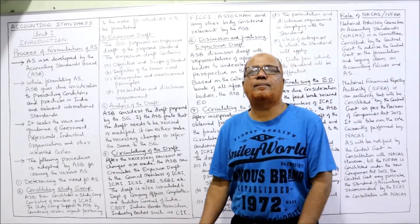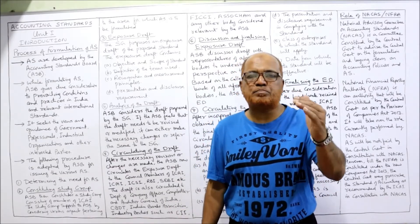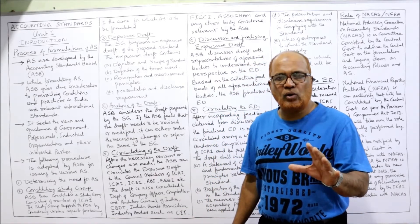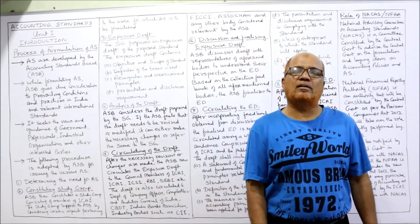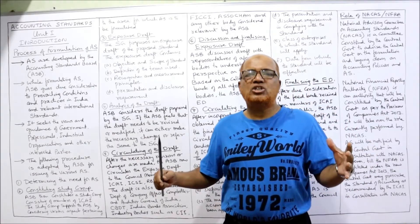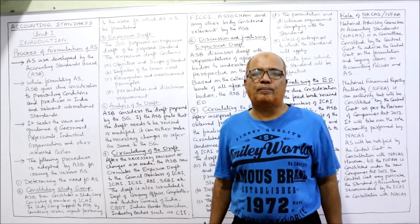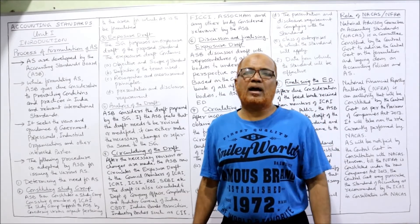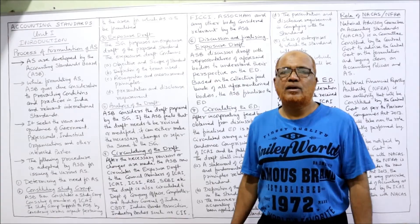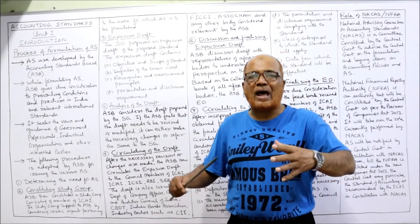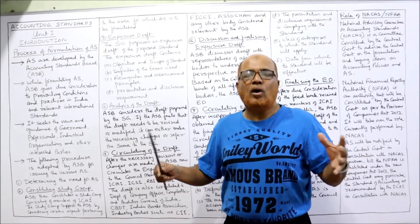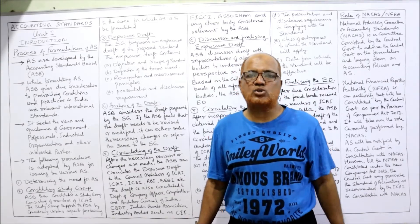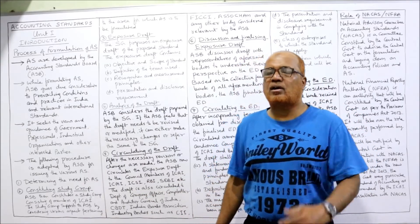Now I'm coming to the main point — what are the steps involved in the formulation of accounting standard? The first step is determining the need for accounting standard. We have so many issues and topics in accounting, so first of all ASB needs to find out on which topic an accounting standard is required. If any topic in accounting is ambiguous, or different opinions or methods exist, they will select that topic for which an accounting standard has to be made.